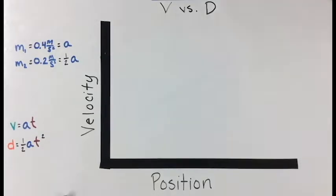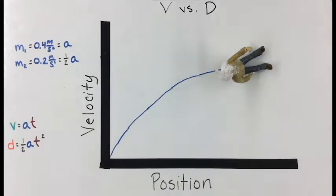On our last graph, we have velocity versus position. If we look at our graph, we see that the slope is changing and the data is not linear again.